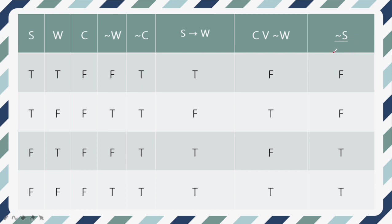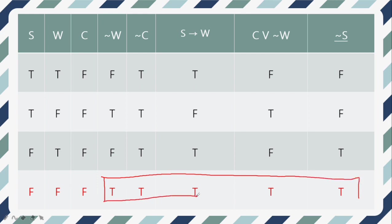For ¬S, we look at S and do the opposite: T becomes F, T becomes F, F becomes T, and F becomes T. The letters in the bottom row are highlighted red because this will be our critical row. The critical row is identified by finding all rows where every premise value is T — and as you can see, this is the only row where all symbols are T; the others contain F values. Now that we have our critical row and all the premise values are T, that means our statement is valid.